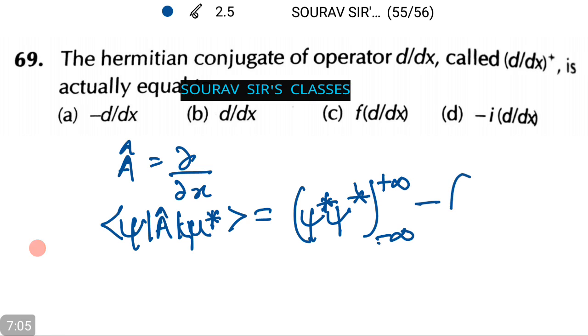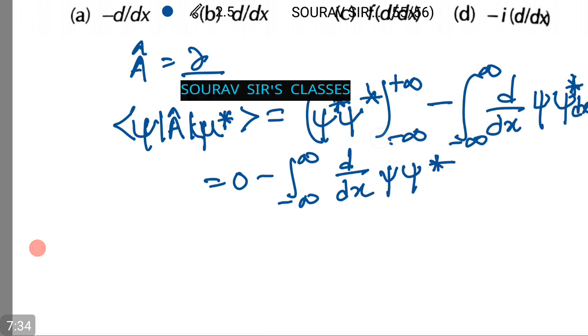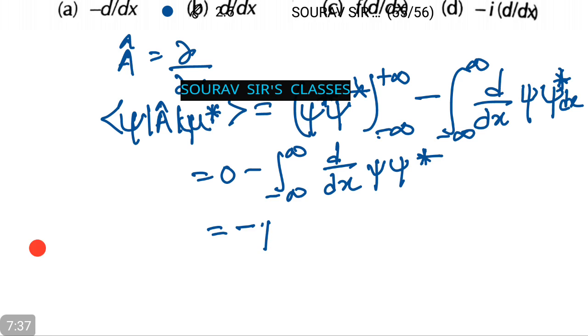Minus integration of minus infinity to plus infinity (d/dx)ψ ψ* dx. This equals 0 minus ∫[minus infinity to infinity] (d/dx)ψ ψ* dx. This equals minus ψ*(d/dx)ψ.